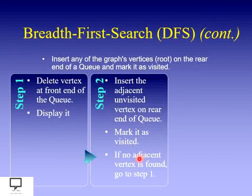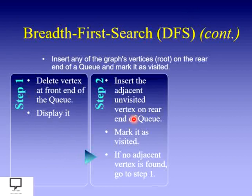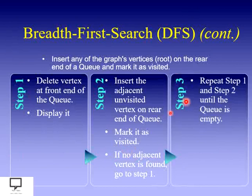Once done with all adjacent vertices, return to step one and delete the vertex at the front end of the queue and display it. Again for the deleted vertex, find all adjacent unvisited nodes, insert them into the queue in step two, and mark them as visited. Repeat this task — steps one and two — until the queue is empty. This is the logic behind breadth first search traversal.